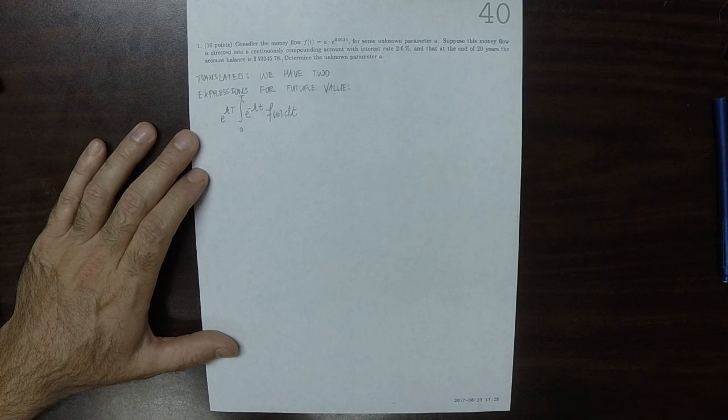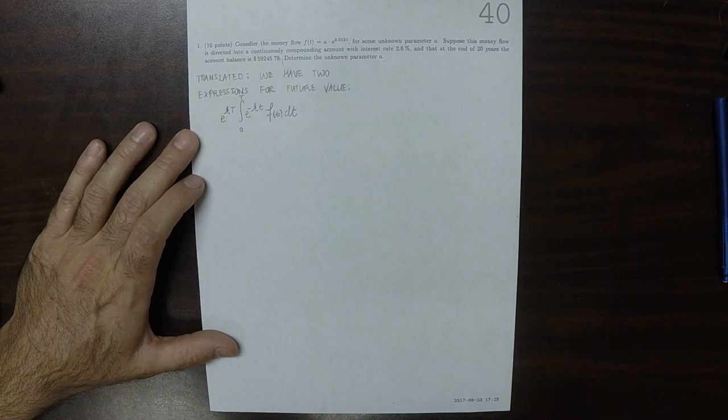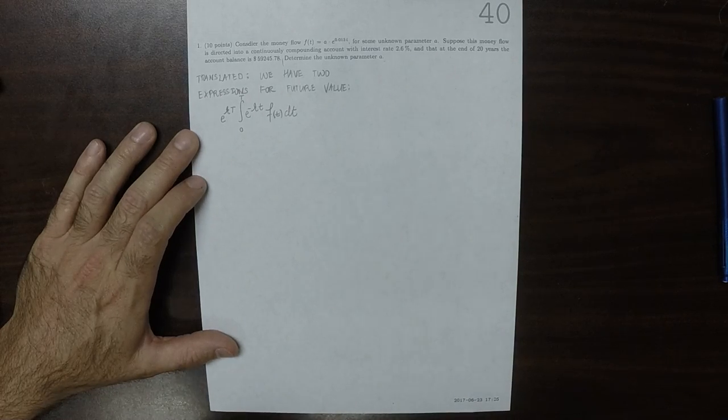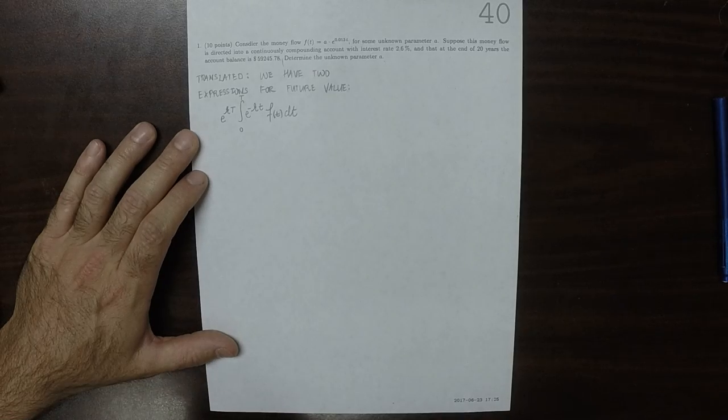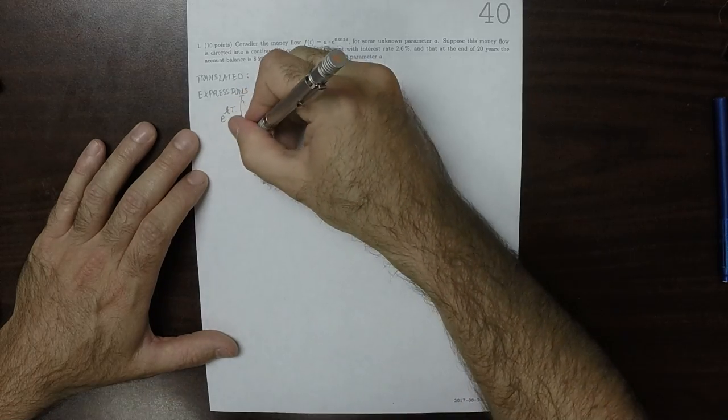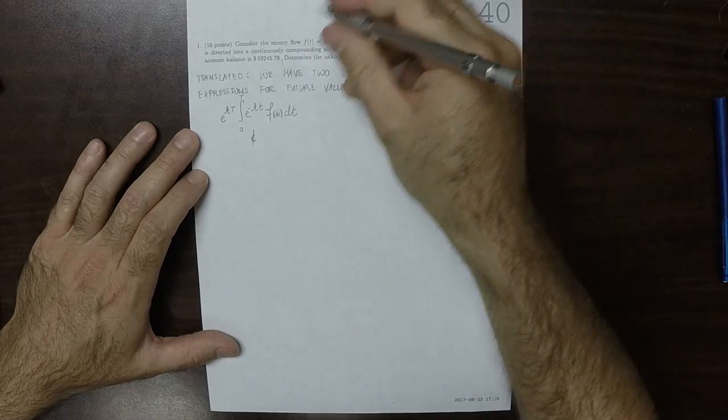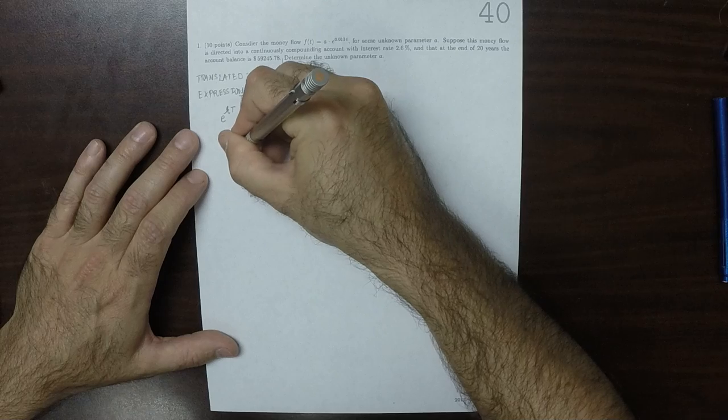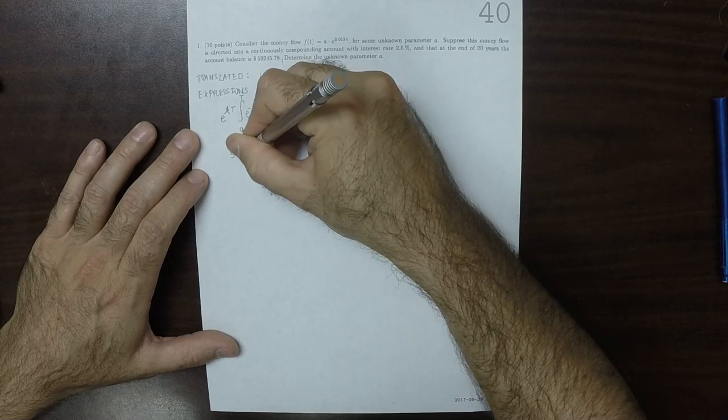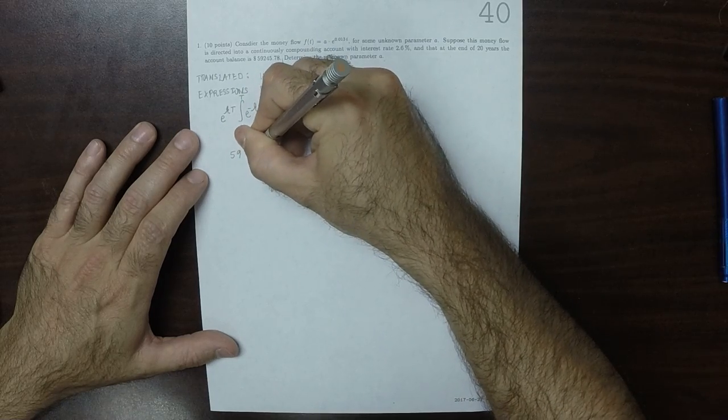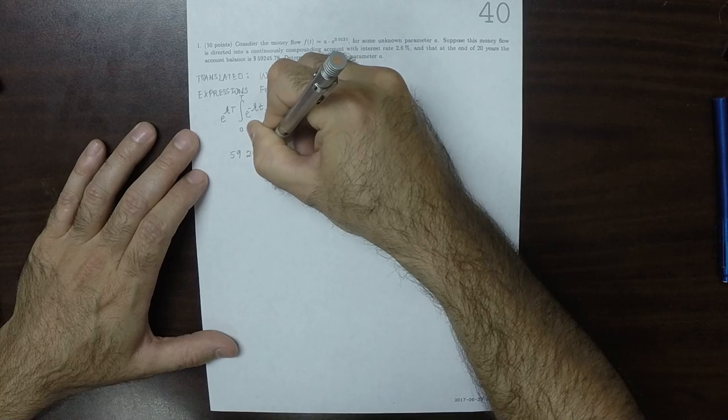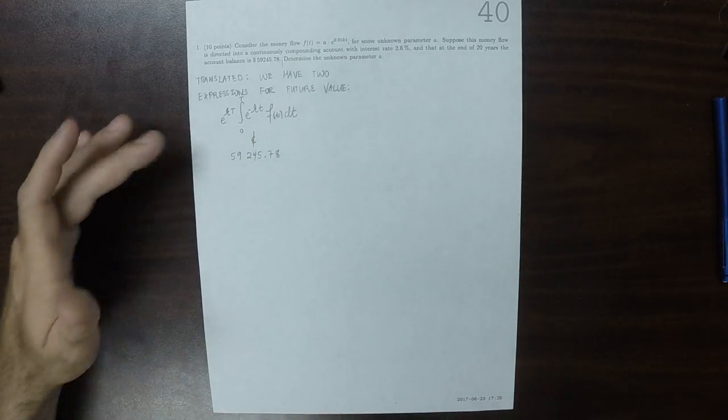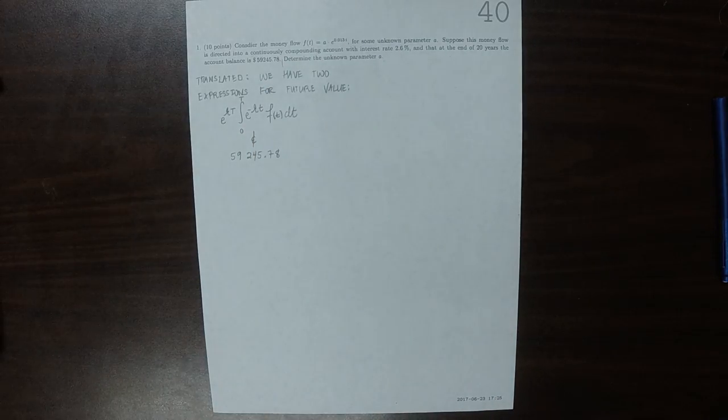So on the one hand, that's how you compute future value, and on the other hand, we're just straight-up told that that is equal to $59,245.78. So we have two different expressions for them.